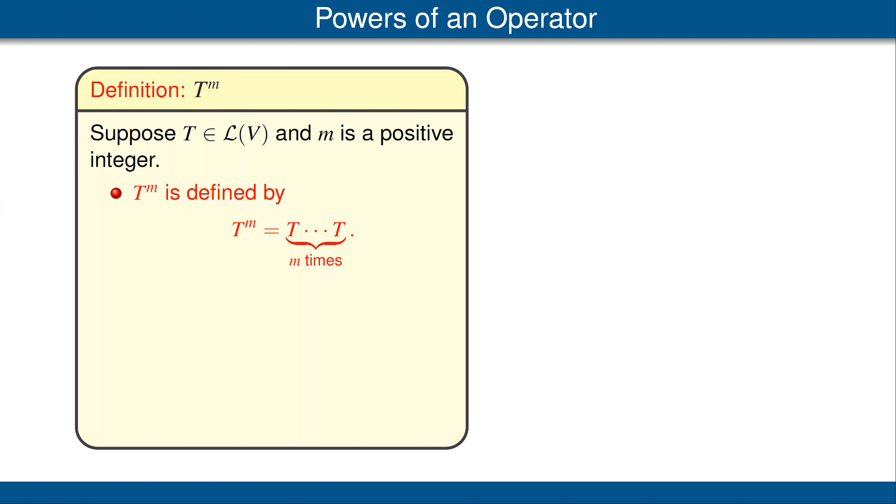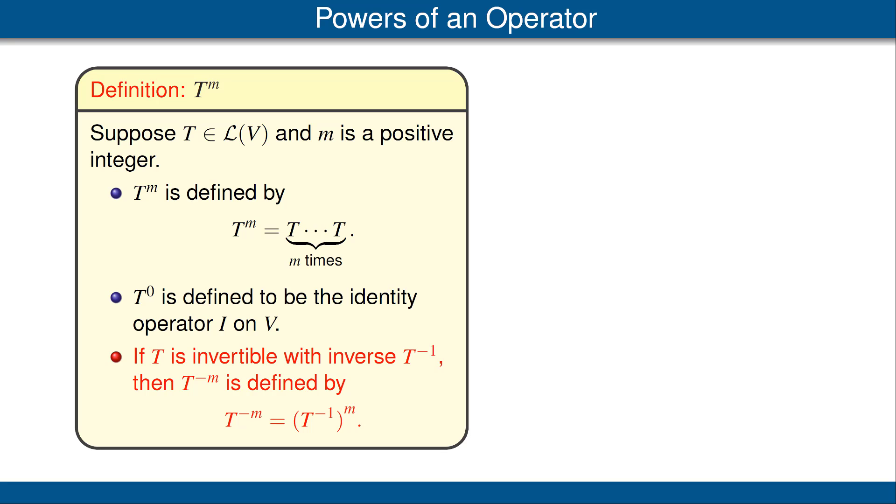We now need to define the powers of an operator T. If M is a positive integer, then T to the M is defined to be T multiplied by itself M times. Recall that multiplication of operators is really just composition of linear maps. Thus, T squared, which equals T times T, is equal to T composed T. T to the 0 power is defined to be the identity operator I on V. And if T is invertible, with inverse T raised to the minus 1 power, then T to the minus M is defined to be the inverse of T raised to the Mth power.